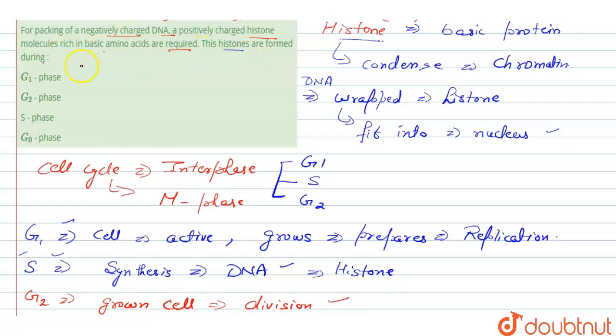In this question, some options are given. First is G1 phase, which includes preparation for replication. G2 phase includes division where the cell is fully grown. In S phase, the histone protein is formed, so the right answer is S phase.